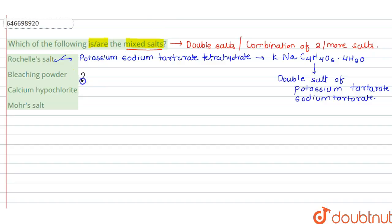So calcium hypochlorite—calcium hypochlorite is nothing but the chemical name of bleaching powder, and this has formula CaOCl2. Now this is not a mixed salt.